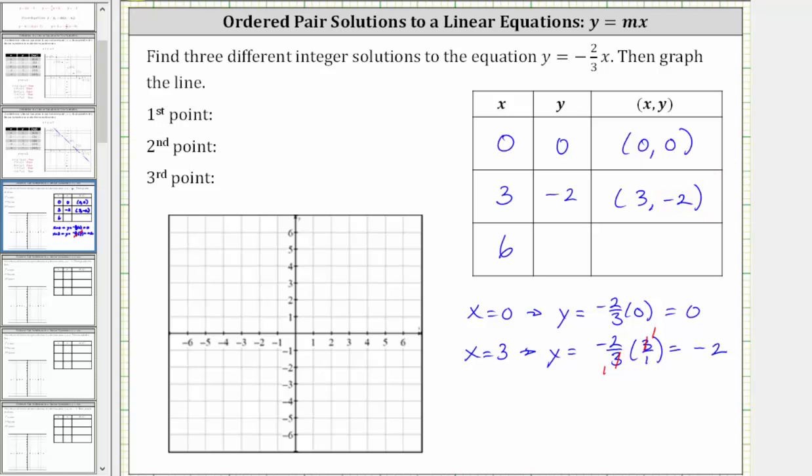Next, we have x equals six. When x is six, y is equal to negative 2/3 times six, or times six over one. Six and three share a common factor of three. Simplifying out the common factor of three,